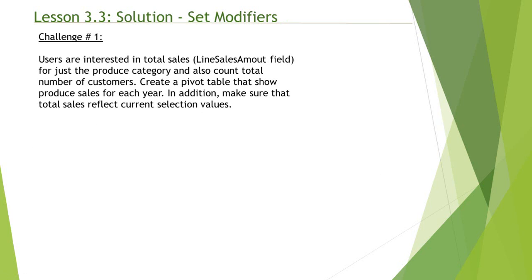Challenge number one states that users are interested in total sales for just the produce category, and also the count of total number of customers. Create a pivot table that shows produce sales for each year. In addition, make sure that total sales reflects current selection values. Before we dive into the solution, let's identify various components of this set analysis syntax that we're about to create.